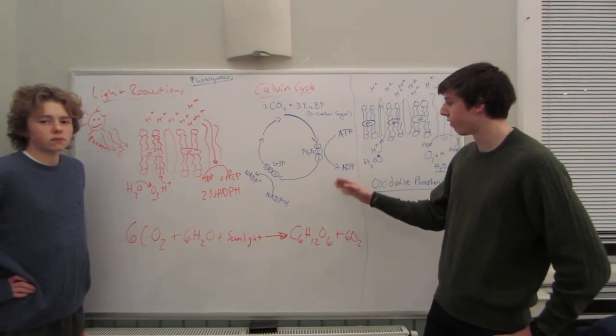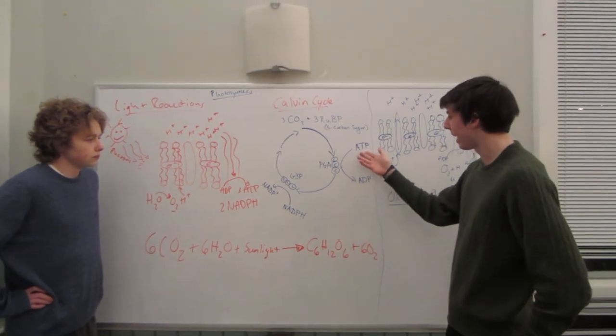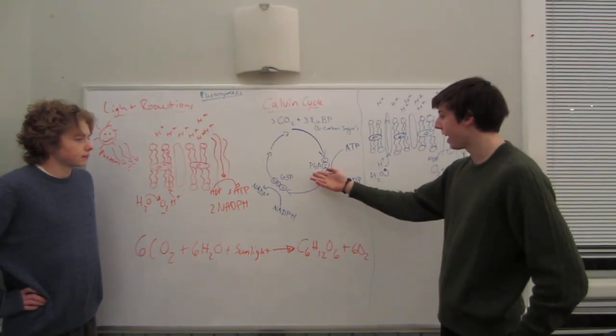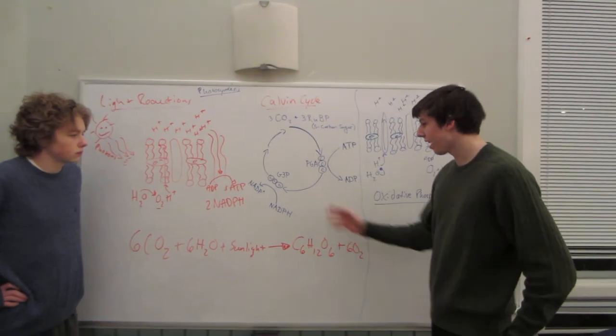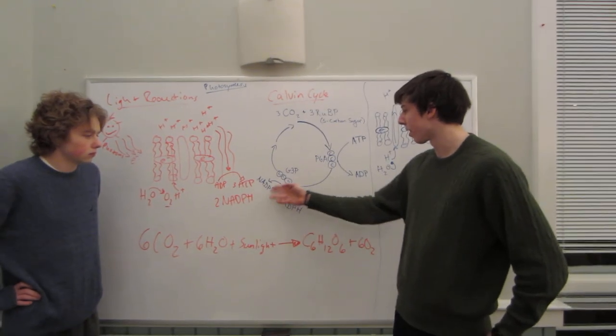which then splits in two to form two three carbon sugars. The first is energized by ATP from the light reaction to form PGA and ADP. The second is reduced by NADPH to form NADP plus and G3P.